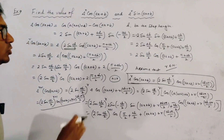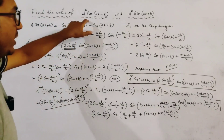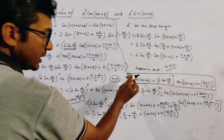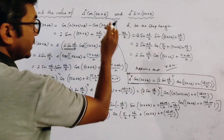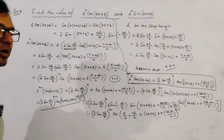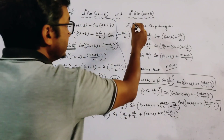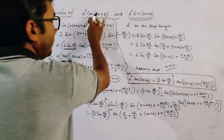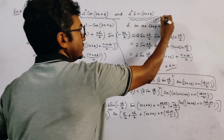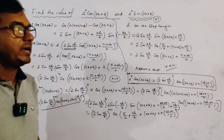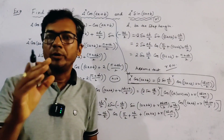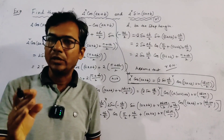So the result is: delta to the power n of cos(ax + b) equals (2 sin(ah/2))^n times cos(ax + b + n·(ah + π/2)). The similar problem for sin(ax + b) is your home task — please write the answer to the second problem in the comment box. Thank you.